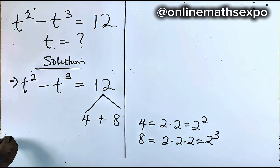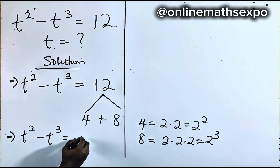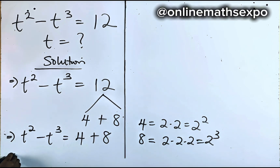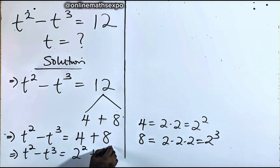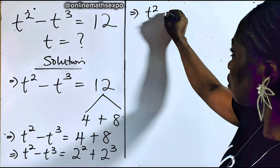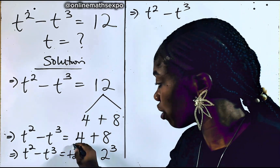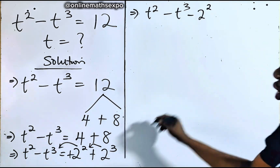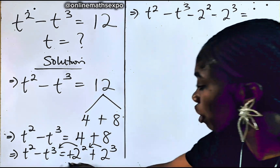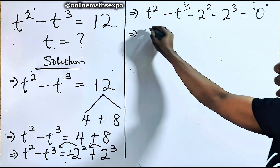So we rewrite the equation as t squared minus t cubed equals 4 plus 8, which is 2 squared plus 2 cubed. Now, since t squared minus t cubed equals 2 squared plus 2 cubed, we move everything to the left side by subtracting, giving us negative 2 squared and negative 2 cubed, so the right side equals 0.